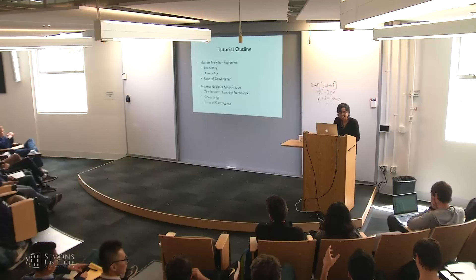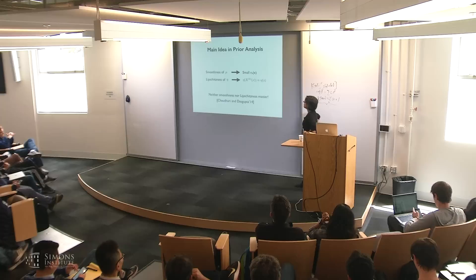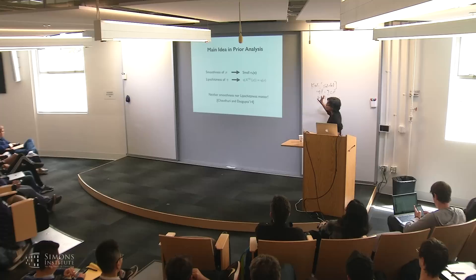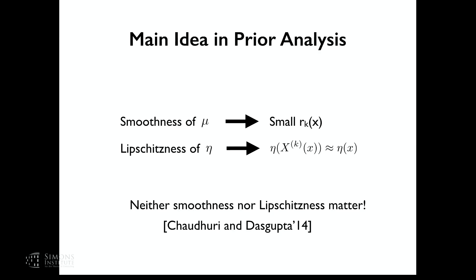Question: what do we know about the finite sample case? A lot of prior work assumed some smoothness of mu, then used the k-nearest neighbor radius bound to argue that if eta is Lipschitz, eta at the k-th neighbor is close to eta(x). But the key observation we made — joint work with Sanjay Dasgupta — is that neither the smoothness of mu nor the global Lipschitz constant of eta actually matters.